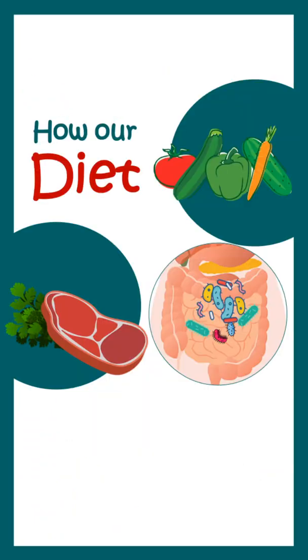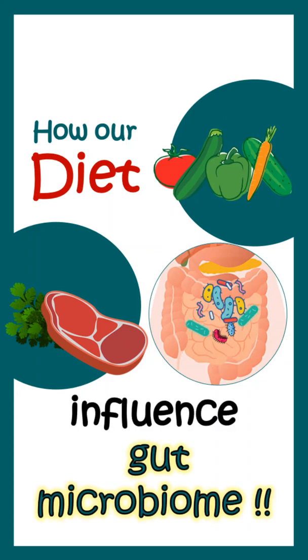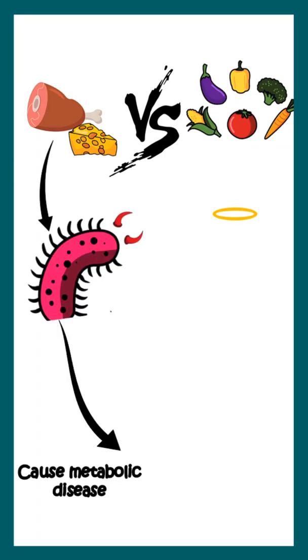Their relative composition is actually induced by what we eat, so our diet can influence the gut microbiome composition. For example, if we eat food which is enriched in protein and fat, that induces the proliferation of harmful bacteria, and that can cause many metabolic diseases.